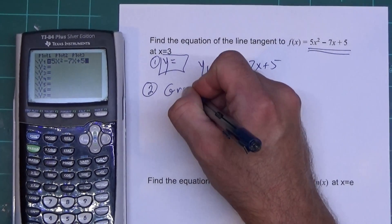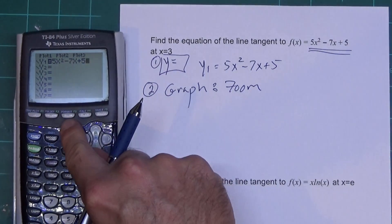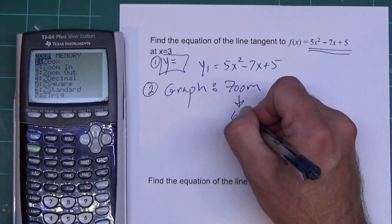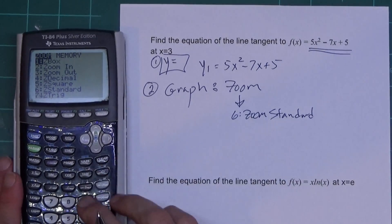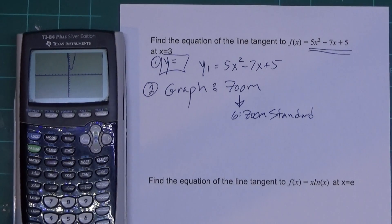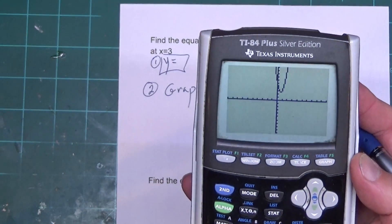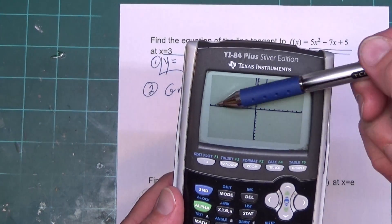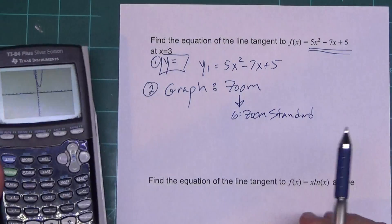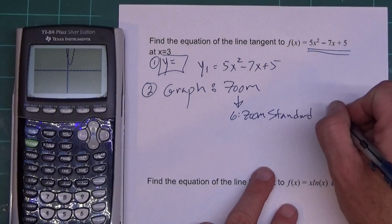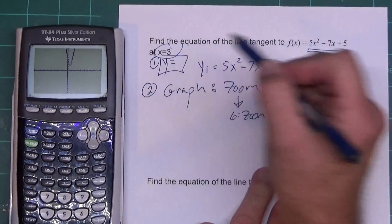Second step is I need a graph. Now most of the time when you do the graph, you can get away with just pressing the Zoom button, which is right here, and then going down to 6 for Zoom Standard. So I go down to 6 and press Zoom Standard. That's going to give me a graph. I don't really care if this graph shows up on the screen or not when I'm working this. Doesn't matter. As long as the x value for your tangent line is between these two points, you'll get the equation of the line. Doesn't matter what the graph looks like.